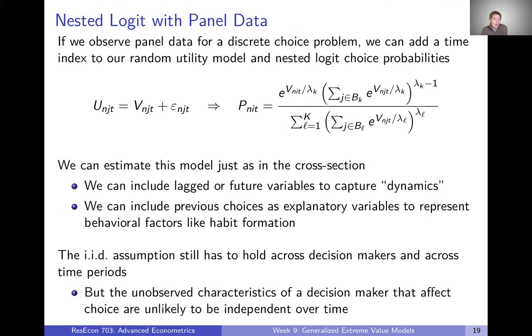We also might run into a situation where we have panel data. So the last scenario was we have less data, we don't have micro data, we have aggregated data. Now we're saying we have even more data. We don't just have a cross section of data, but we have a whole panel where we observe decision makers making choices many times, multiple times in multiple different time periods where we observe these choices. And so if we observe a panel data set for a discrete choice problem, in this case we can just simply add a time dimension to our random utility model and into our choice probabilities and everything works just the same.